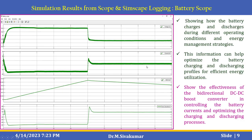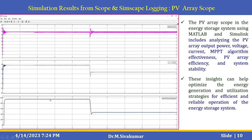Next you can see the battery scope, which shows how the battery charges and discharges during different operating conditions and energy management strategies. This information can help optimize the battery charging and discharging profiles for efficient energy utilization. It shows the effectiveness of the bi-directional DC-DC boost converter in controlling battery operation and optimizing the charging and discharging process. Finally, the PV array scope analyzes the PV array output power, voltage and current, showing how the MPPT algorithm contributes to PV array efficiency and system stability. These insights help optimize energy generation and utilization strategies for reliable operation.